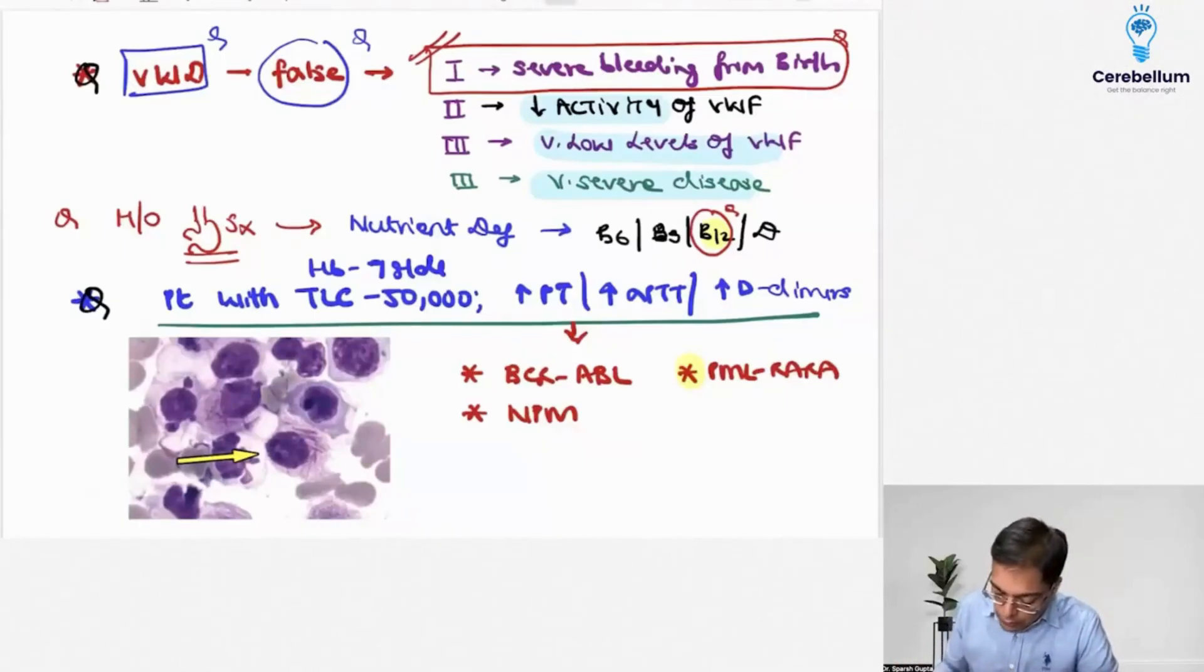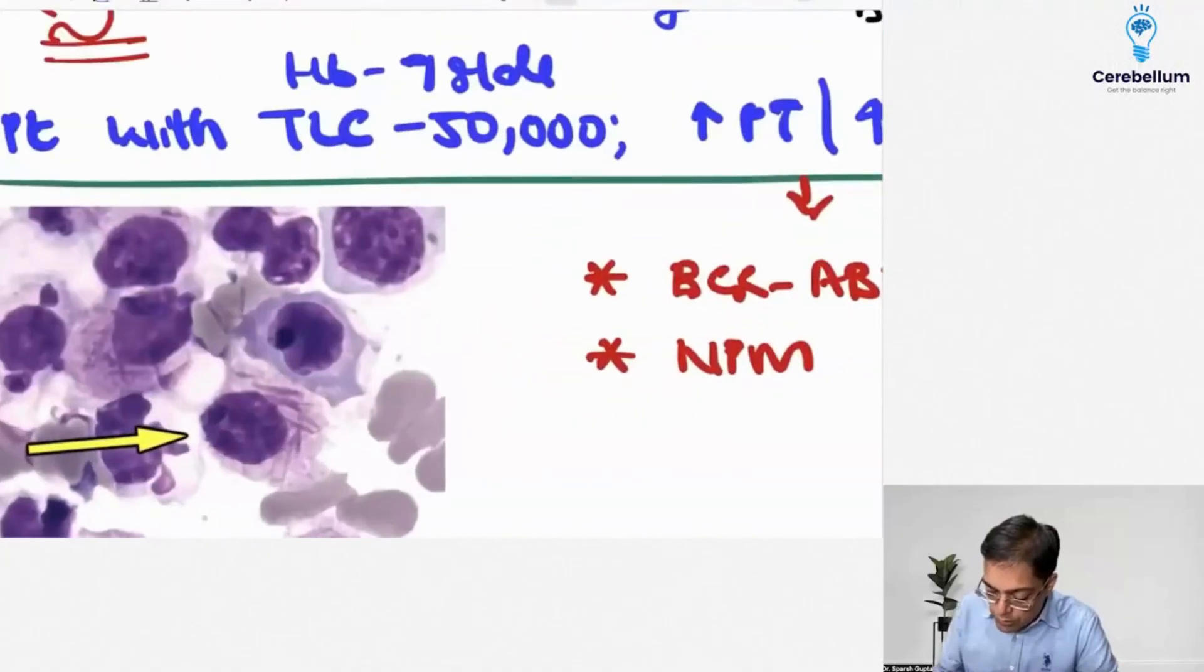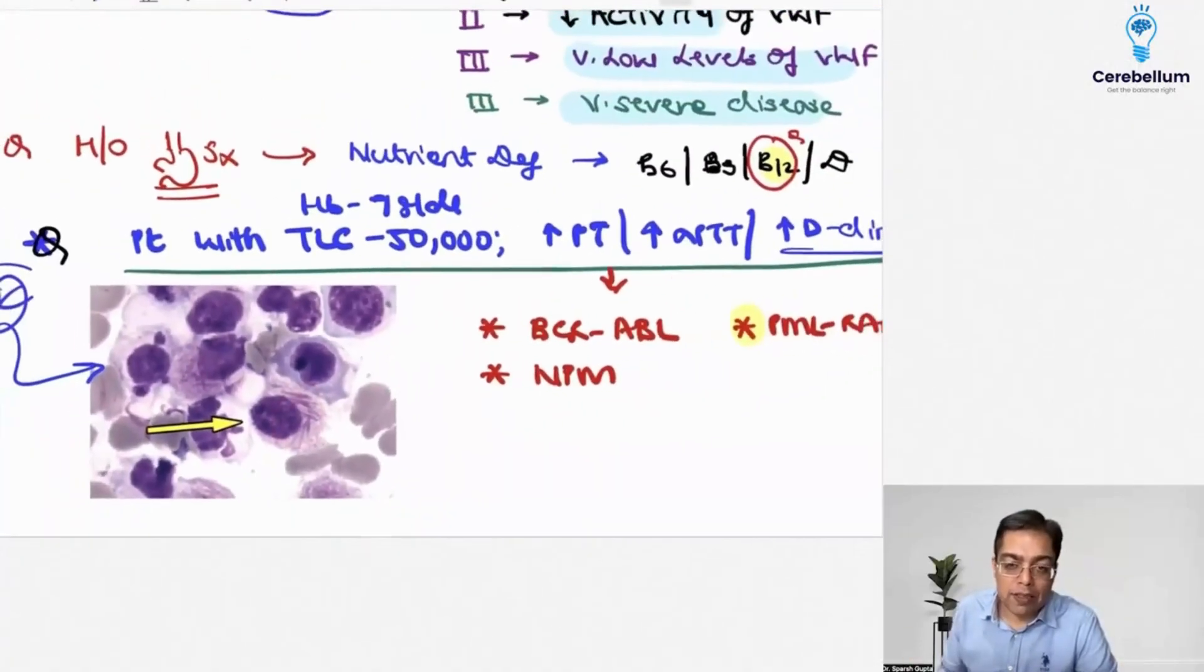The question was making a mention of a patient who was having a hemoglobin which was low, 7 grams. The patient was having a high TLC count around 50,000 or so, and altered coagulation profile. Prothrombin time was elevated, activated partial thromboplastin time was elevated, D-dimers were present, all suggestive of the fact that the patient was having DIC. It also had an image which had the presence of something resembling Auer rods, or some people said multiple of them were present, so faggot cells.